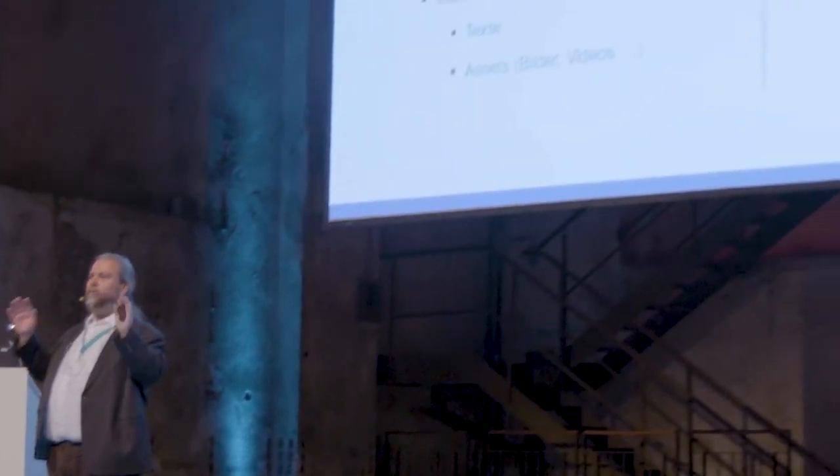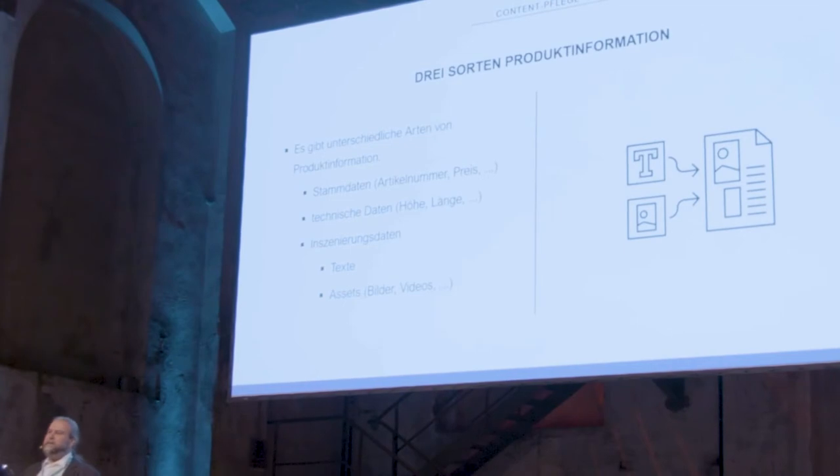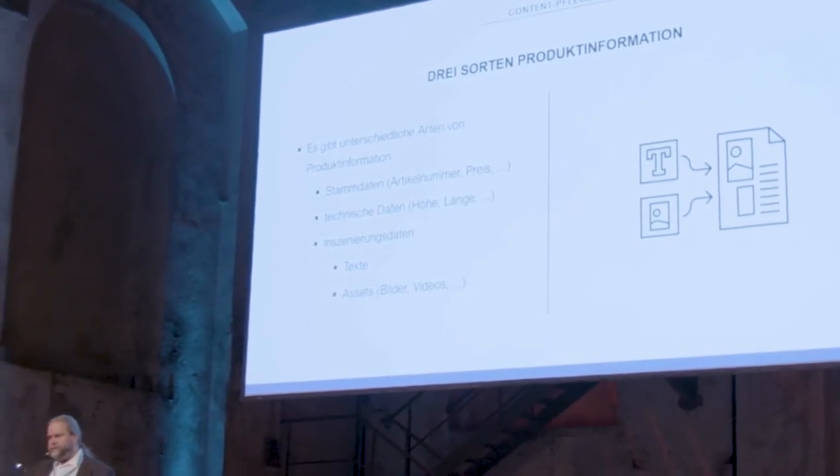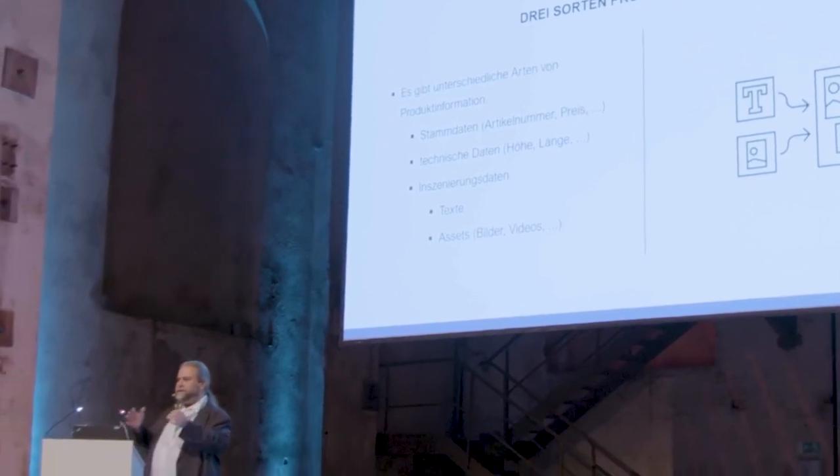When we talk about product data, we're talking about three different types of information, roughly speaking. First: master data — basically data from the ERP. Second: technical data — height, length, width. Third: staging data — all of the data I need to get a product across in advertising terms. This wonderful term I simply stole from Christian Klima. Depending on what I'm looking at, I face different challenges and have different opportunities to mess up. Master data is usually uncritical — it comes out of ERP through a quality-assured process.